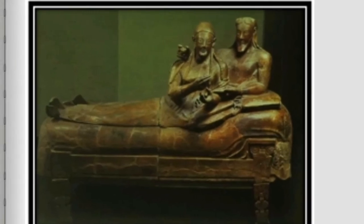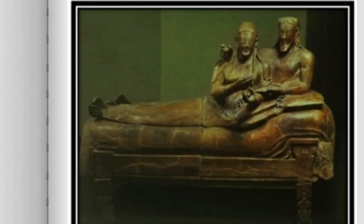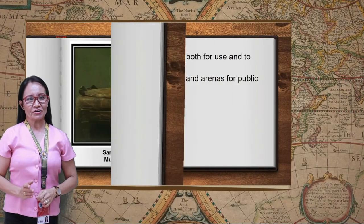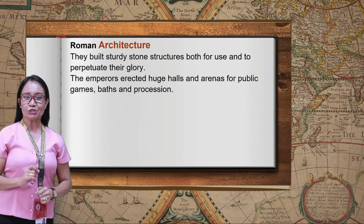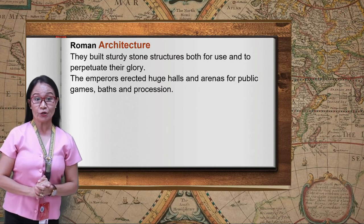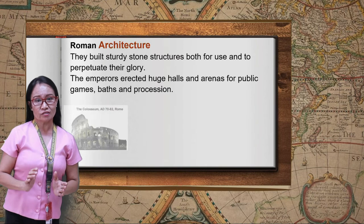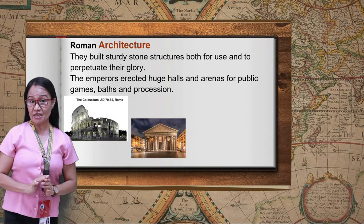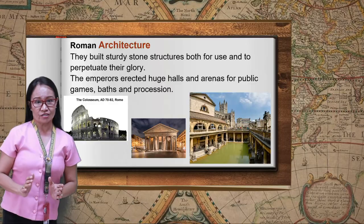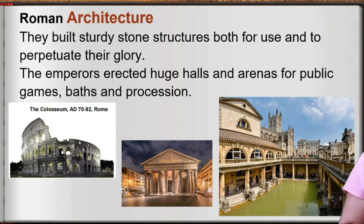In Roman architecture, they built sturdy stone structures for public use and to perpetuate their glory. Emperors erected huge halls and arenas for public games, baths, and processions. They built these with gigantic arches of stone, bricks and concrete, or with barrel vaults.